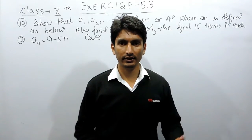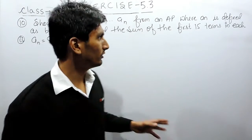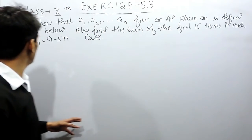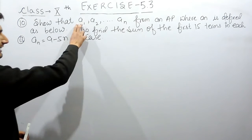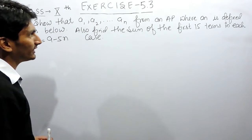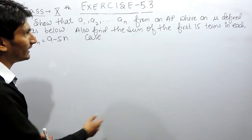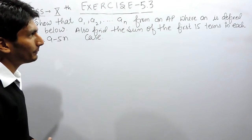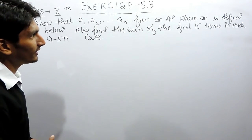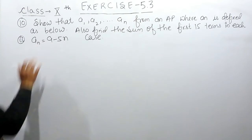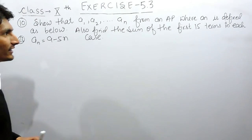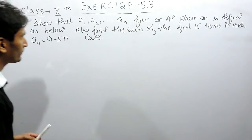Hello everyone. In this video we are going to solve the second part of question number 10. You have to show that a1, a2, and till an form an AP, where an is defined as given, and you have to find the sum of first 15 terms.